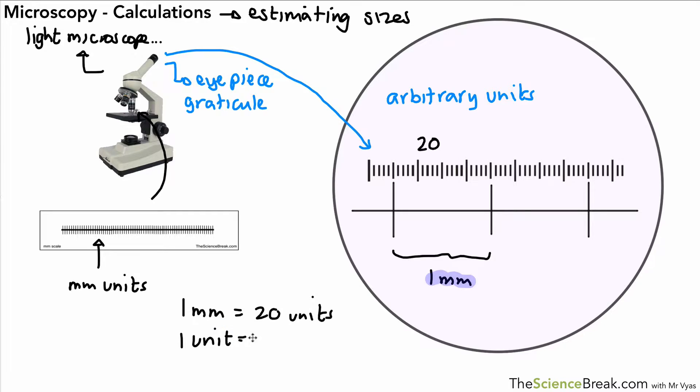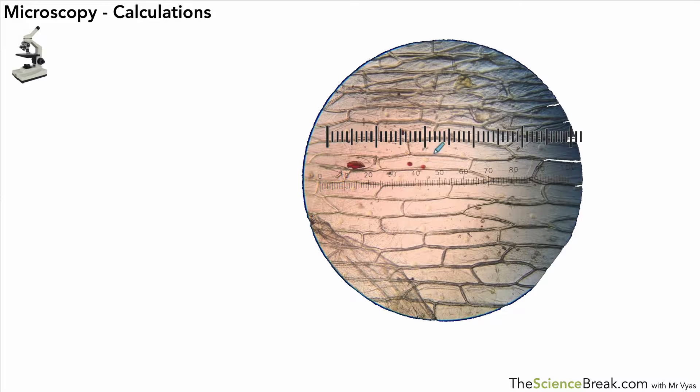That would be a case of doing one divided by 20 and that gives us an answer of 0.05 millimeters. Each unit is 0.05 millimeters. We can now then find a slide of cells that we want to look at.